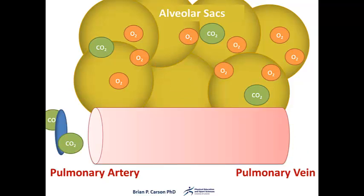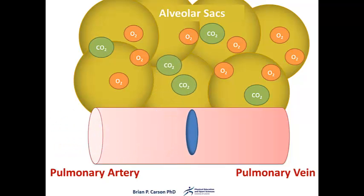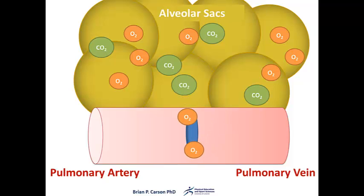If we look at that process again: the erythrocyte carrying carbon dioxide passes through the capillaries. Carbon dioxide moves down its pressure gradient and into the alveoli. Oxygen moves down its pressure gradient and into the capillaries, where it binds to hemoglobin to form oxyhemoglobin.